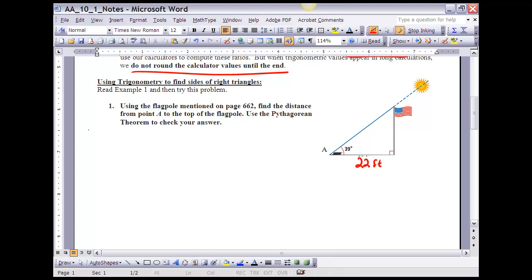Now what we want to do is look at using trigonometry to find sides of a right triangle. At the beginning of this chapter, section 10-1, there was an example problem involving a flag, similar to the picture that you see here, which is also in the book. If you haven't done so already, take a look at example 1. This problem is very similar to that. Using the flagpole mentioned on page 662, which is this picture right over here, find the distance from point A to the top of the flagpole, using Pythagorean's Theorem to check your answer. So if this is 22 feet, and I want to find the distance from A to the top here, I'm going to call that distance x.